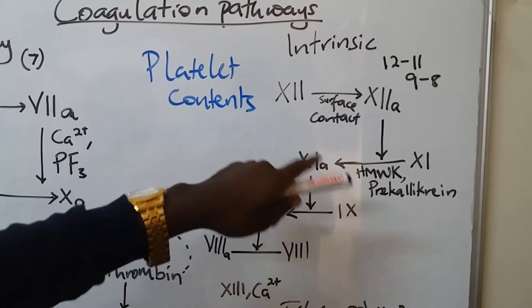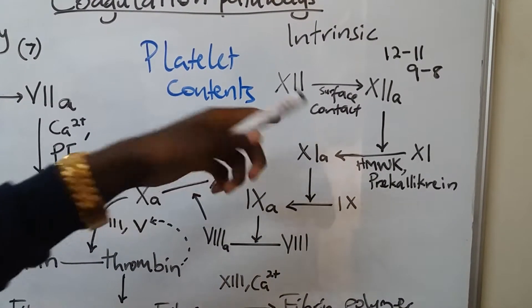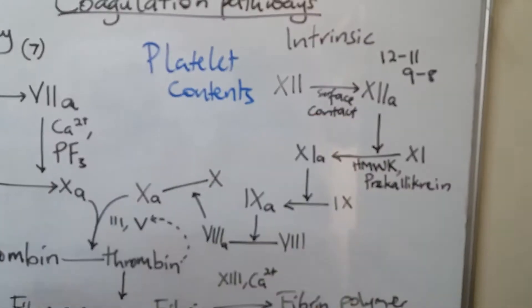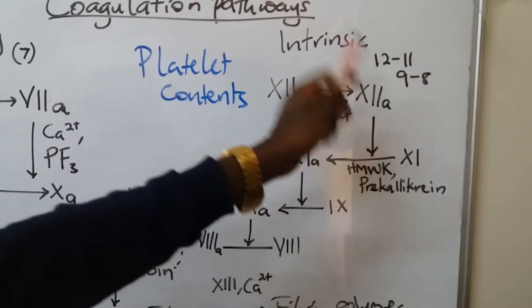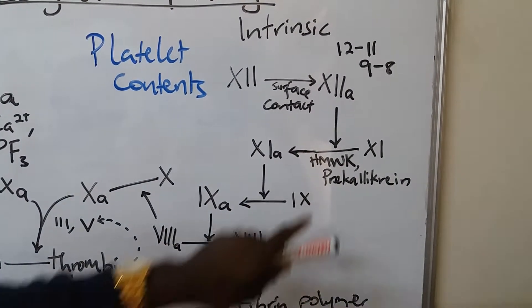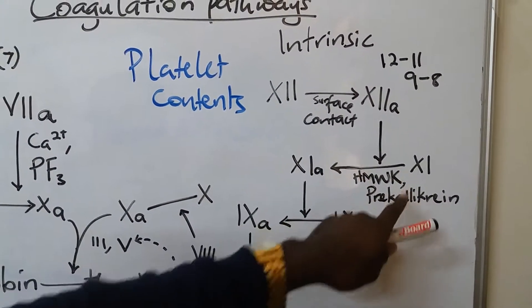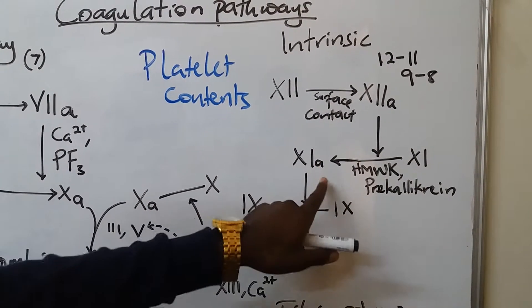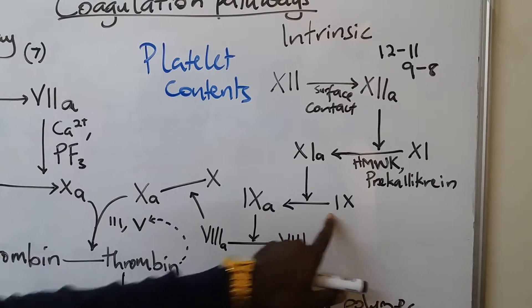We shall have activation of factor twelve, which is also called contact factor or Hageman factor. This is surface contact which will activate it to activated Hageman. The Hageman will come and together with high molecular weight kininogen and pre-kallikrein will form activated 11. Activated 11 will come and activate 9.